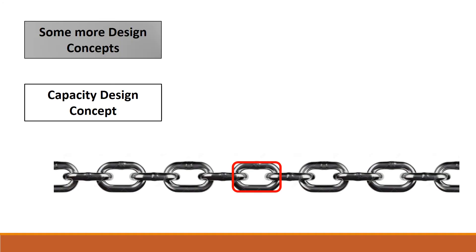Before we proceed, we also need to know about certain design concepts. One important design concept briefly discussed in the last lecture is the capacity demand design concept. This is analogous to a chain — if there is a weak link, the structure will tend to break at that weak link.